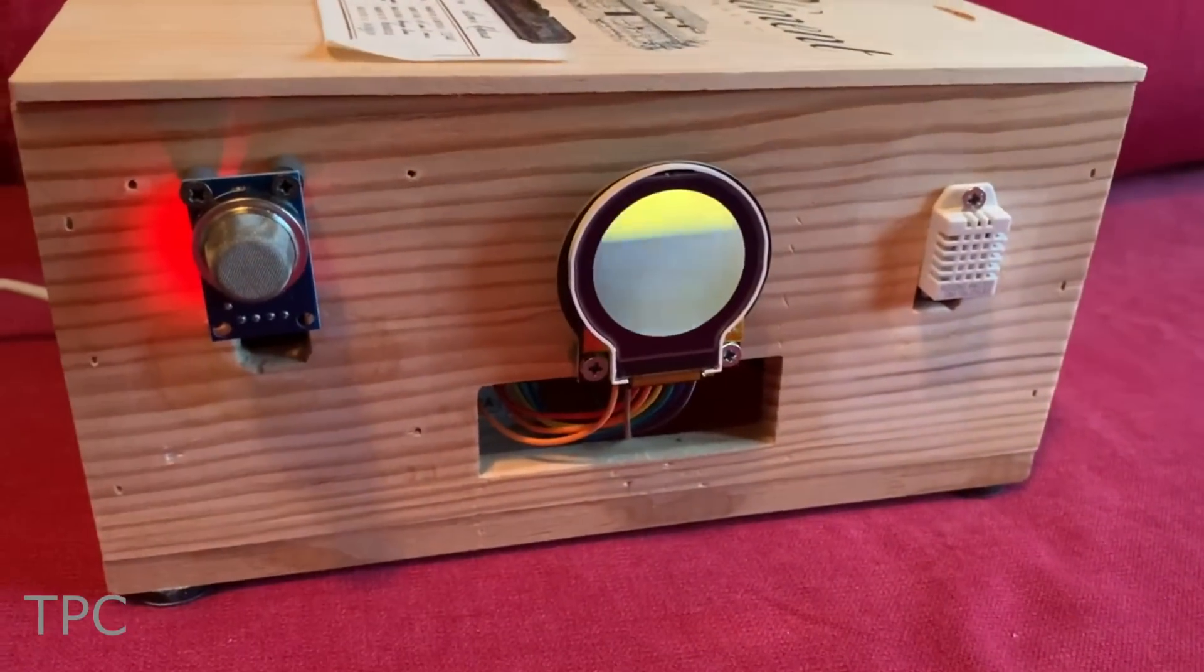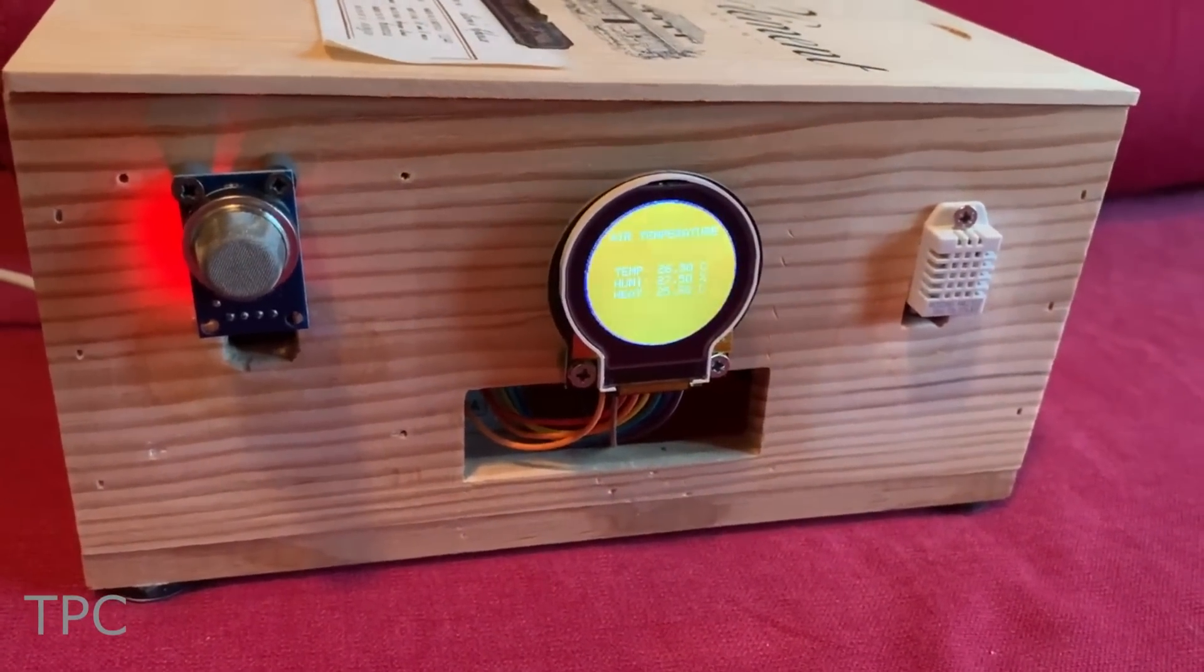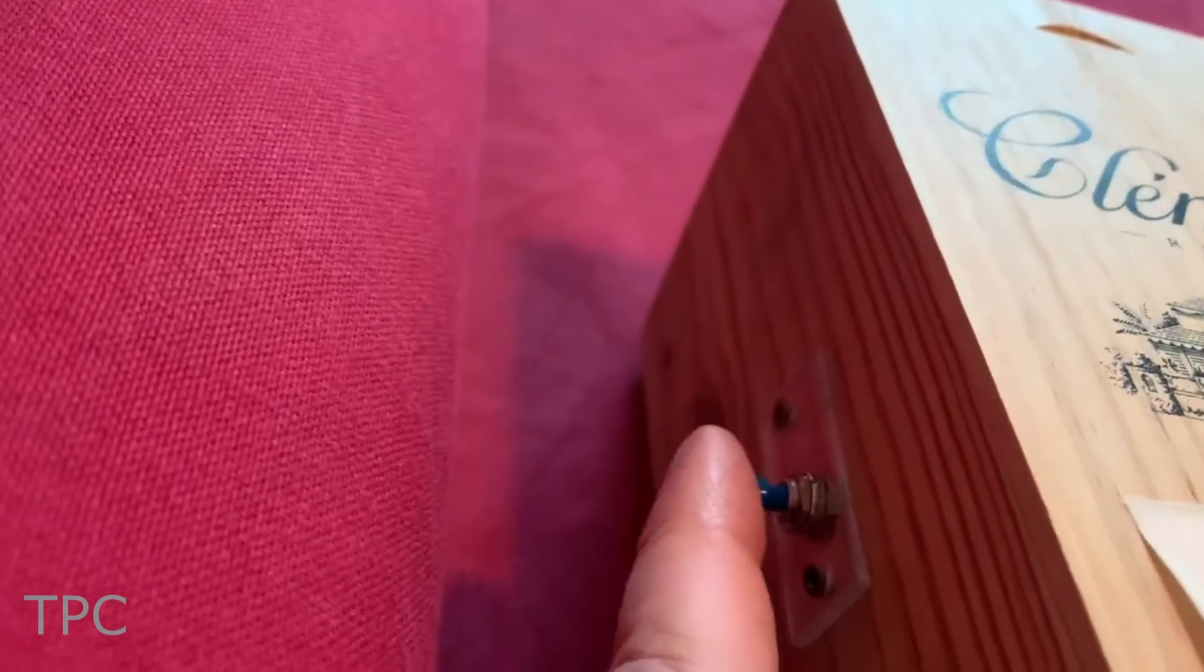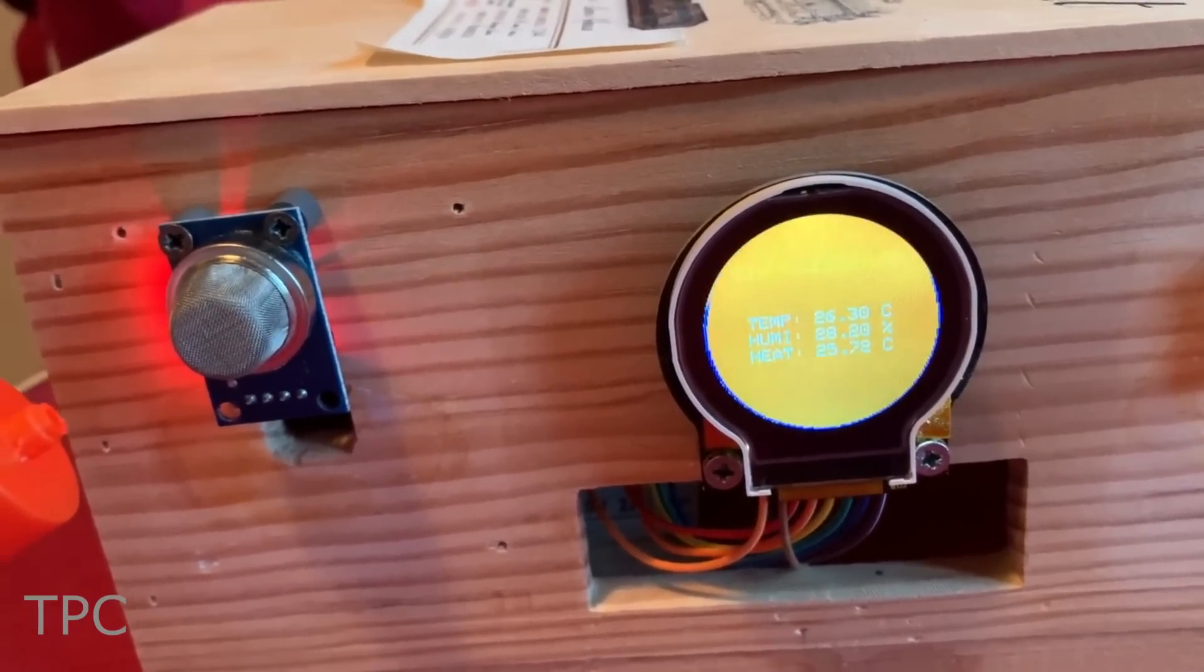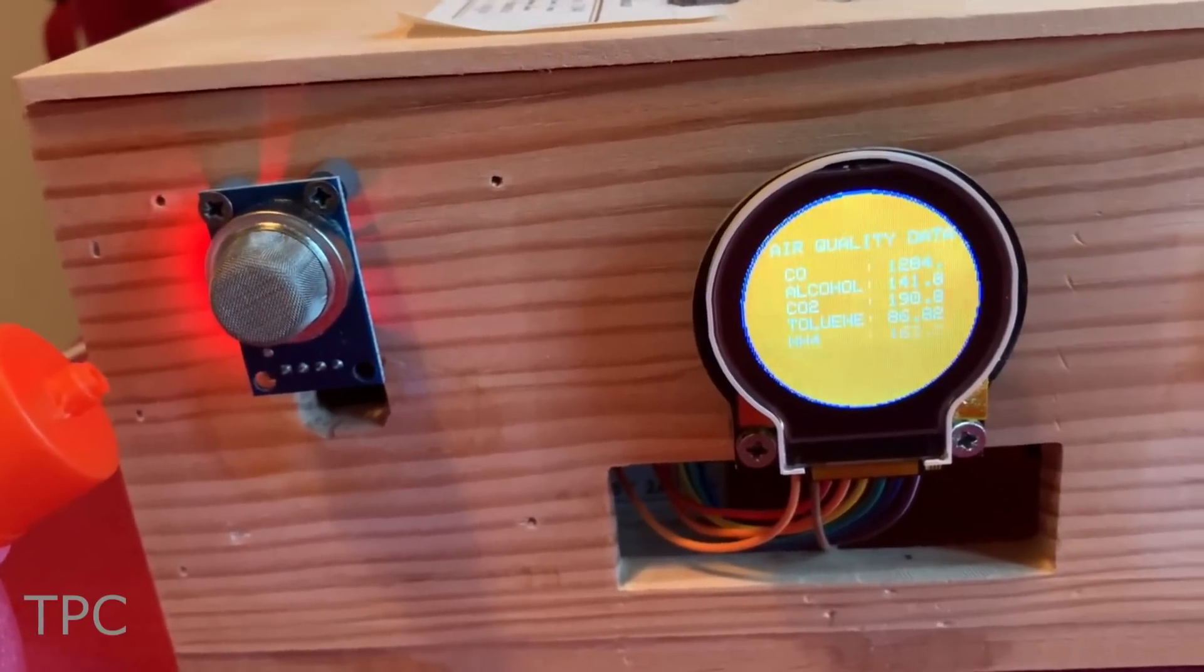After boot, you need to reset the Arduino for full calibration of the sensors. To reset the Arduino, a button is provided at the back of the box, so you don't have to open the box to do so. As soon as the sensors detect any gases, it quickly updates the values on the screen.